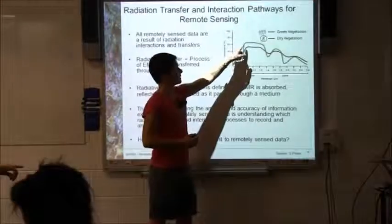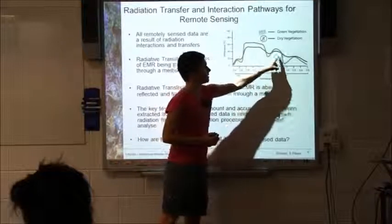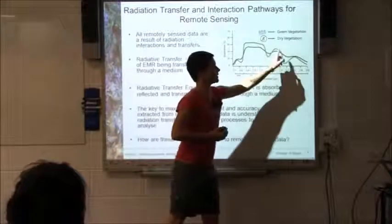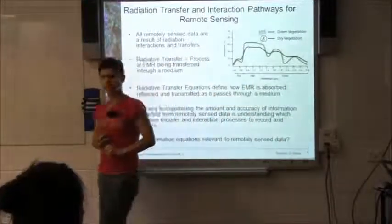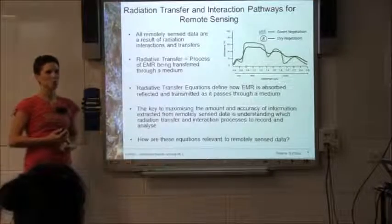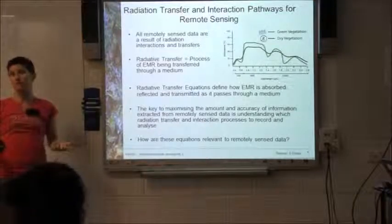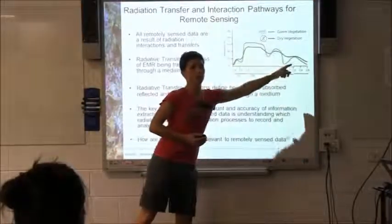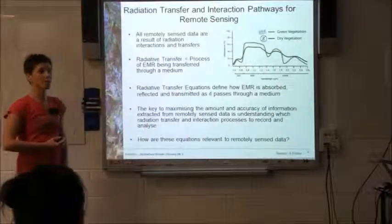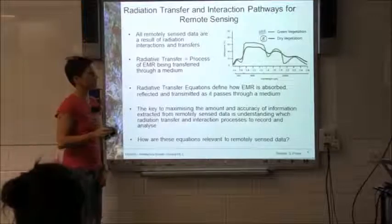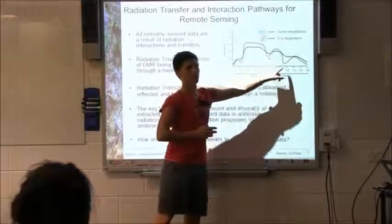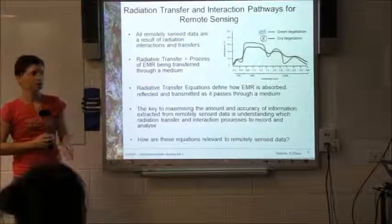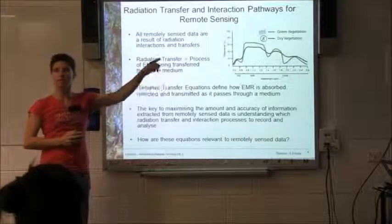What else do we see in that graph? The green vegetation drops a lot more in the shortwave infrared, or mid-infrared region. Why does the green drop down there? Water absorption. So the more water there is in a leaf, the more it absorbs in those two areas. If I want to measure how much water is in a leaf, I simply measure how much light is absorbed in those two regions.